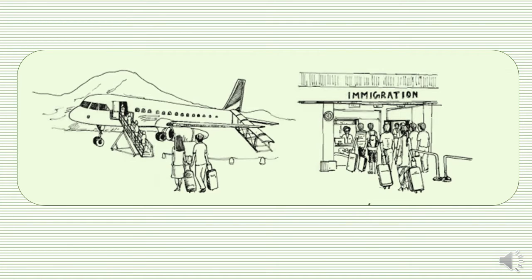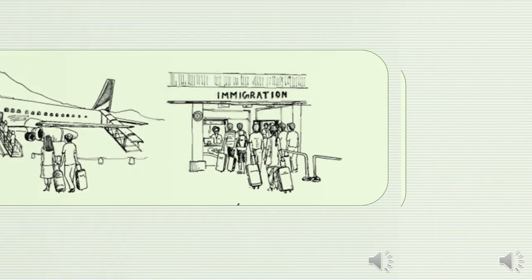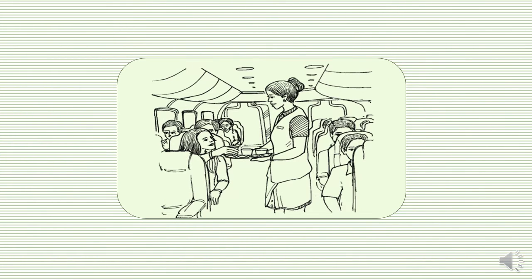At the beginning, look at the pictures. What are they about? Yes, that's correct. They are pictures of an airport. You can see that some people are going to fly, and in the second picture there is an immigration counter where people are waiting. In the next picture, the passengers are in the aeroplane. From these pictures, can you guess what we are going to read today? Yes, our today's class is about traveling by an aeroplane.